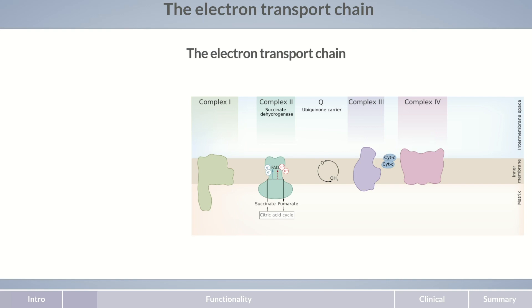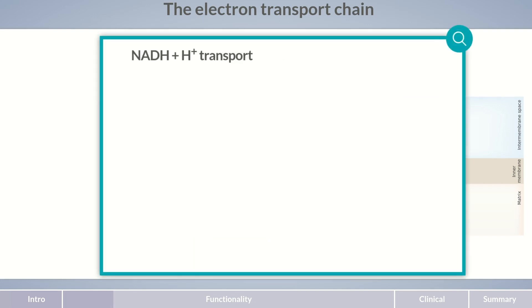FADH2 transfers its electrons and protons to complex 1. To do so, they need to be present in the mitochondrial matrix. Since the citric acid cycle and beta-oxidation take place in the mitochondrial matrix, there's no problem with the resulting reducing equivalents. But that's not the case for NADH and H+ from glycolysis, which is produced in the cytosol. Its electrons and protons can't easily pass through the mitochondrial membrane to reach the proteins of the respiratory chain. The outer mitochondrial membrane possesses many porins and therefore doesn't represent an obstacle. However, NADH and H+ can't permeate the inner mitochondrial membrane.